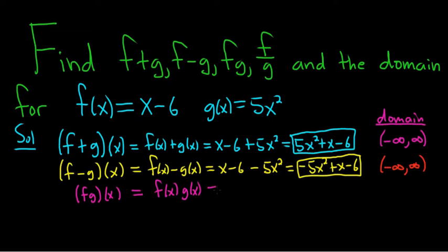So this is equal to, so it's x minus 6. That's your f(x). And then g(x) is simply 5x squared. All right, now we have to carefully multiply. So 5x squared times x,